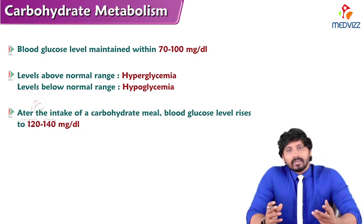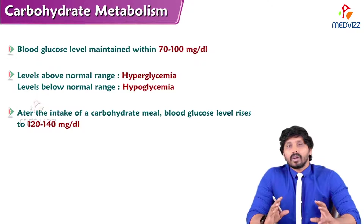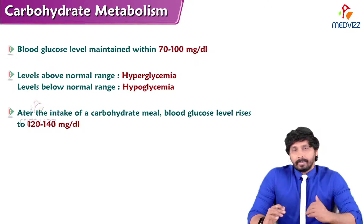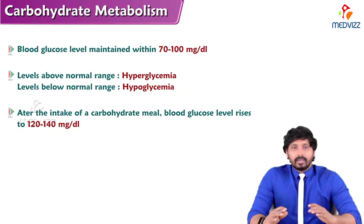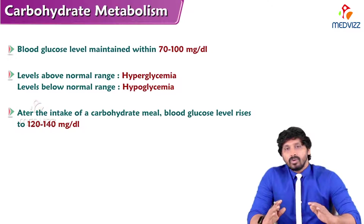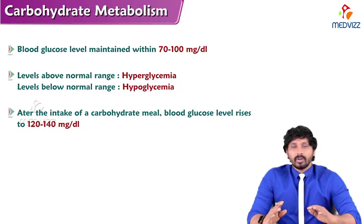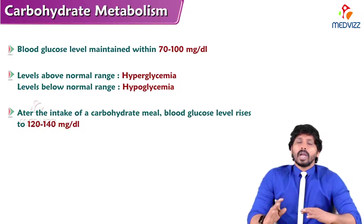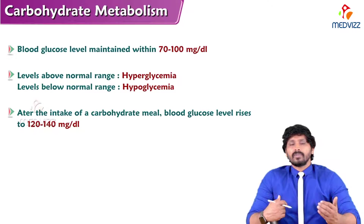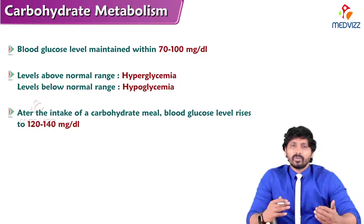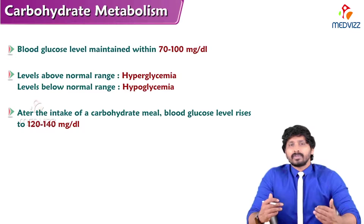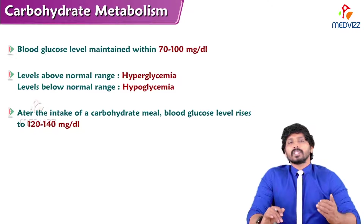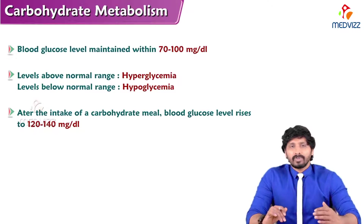Blood glucose levels are maintained within a range of 70 to 100 milligrams per deciliter. There are different conditions where blood glucose levels vary: fasting blood glucose is 70 to 100, random blood glucose is 100 to 120 mg/dL, and post-meal levels are around 120 to 140 mg/dL, but not beyond that, because the body has a sophisticated mechanism which will not allow blood glucose levels to rise above 140 mg/dL.